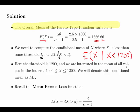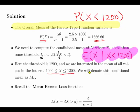We also have to find the probability that X is less than 1200. Here the threshold is 1200 and we're interested in the mean of all values in this interval. We're going to denote this conditional mean as ML.